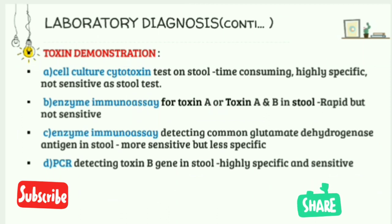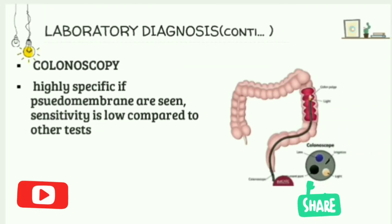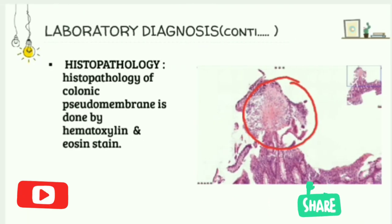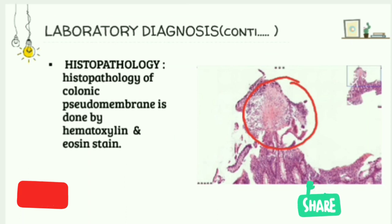The fourth method is PCR, which detects Toxin B gene in the stool — it is both highly specific and sensitive. To check for pseudomembrane, colonoscopy is used; it is highly specific but sensitivity is low compared to other tests. Histopathology of the colonic pseudomembrane can be done using hematoxylin and eosin staining.